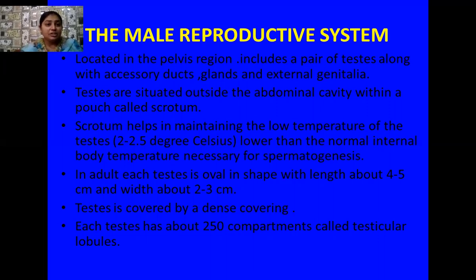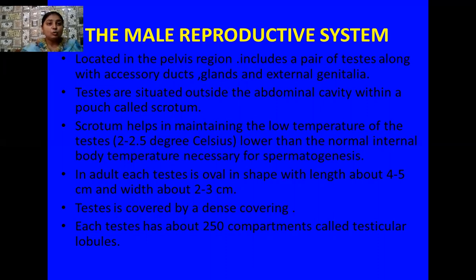In an adult, each testis is oval in shape with a length of 4 to 5 cm and a width of 2 to 3 cm. Each testis is covered by a dense coat, and each testis has 250 compartments inside it which are known as testicular lobules.